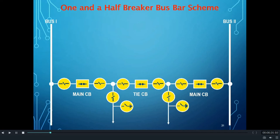Here we can see there are two busbars: bus one and bus two. Two feeders are connected between bus one and bus two through three numbers of circuit breakers — that is, two main circuit breakers for the two feeders and one tie circuit breaker in between the feeders.